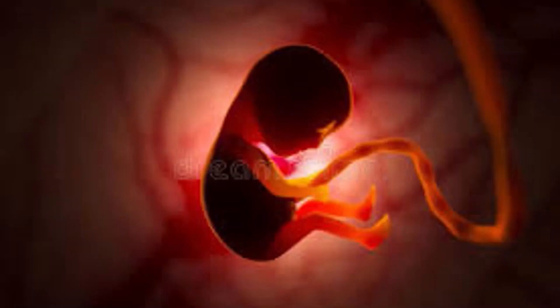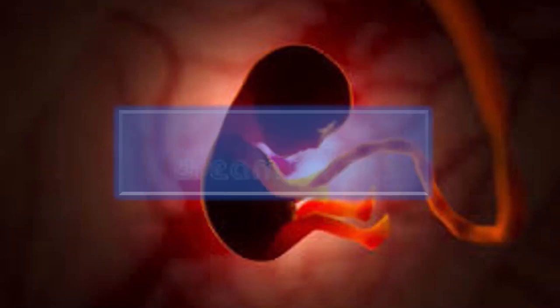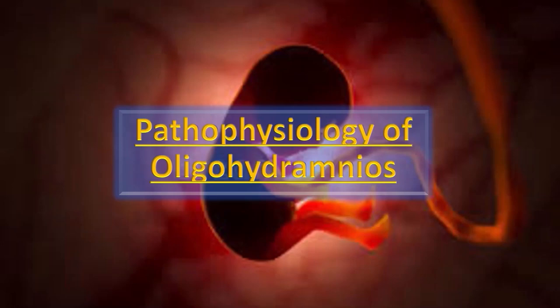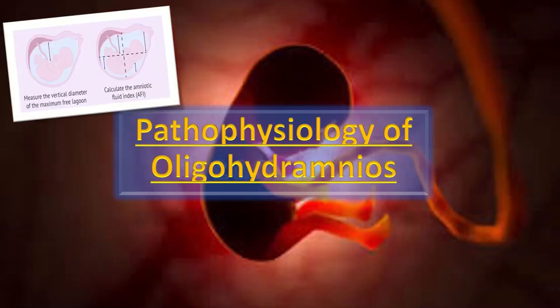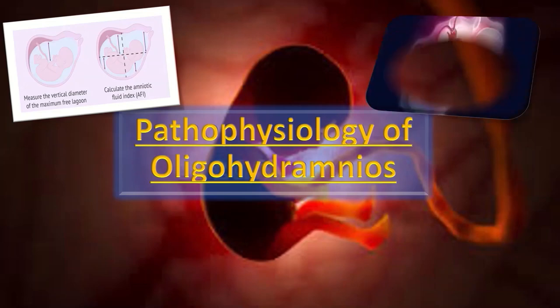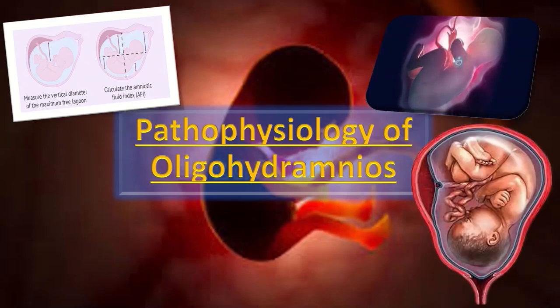Now we will discuss the pathophysiology of oligohydramnios. Amniotic fluid is formed by a specific mechanism in pregnancy. First I will explain how amniotic fluid is formed normally, and then clarify how the different causes we discussed reduce the amount of fluid around the baby.